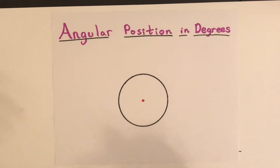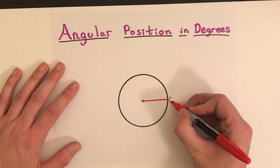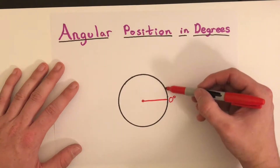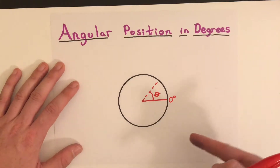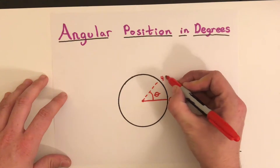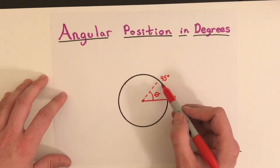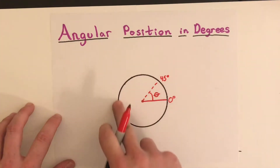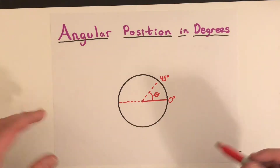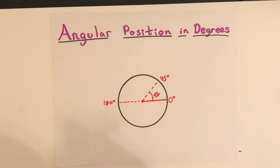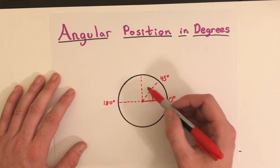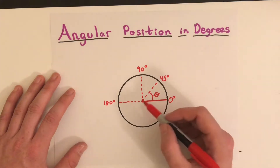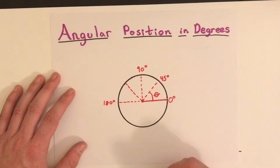Angular position in degrees is something you'll probably be familiar with. The reference line starts at zero degrees. If an object has moved upward to somewhere around 45 degrees, that's our theta — our angular position. If it goes halfway around the circle, that ends up being 180 degrees. Straight up is 90 degrees, and halfway between 90 and 180 would be 135 degrees.